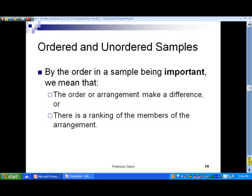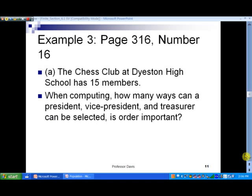Now, by a sample, by the order being important, we mean that one of two things: the order or arrangement makes a difference or there is a ranking involved of the members of that arrangement. So, if there's a ranking involved or the order makes a difference, there's a distinction, we say their order is important. Otherwise, we just simply say order is not important. All right. So, let's take a look at an example of one of these now.